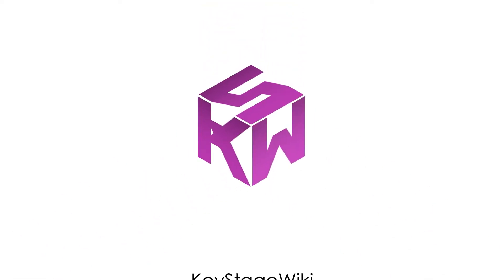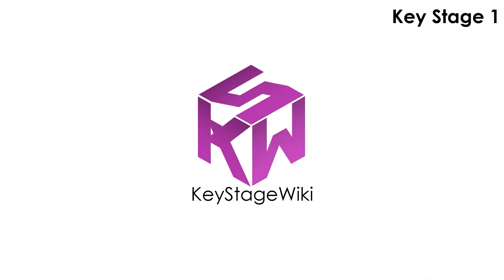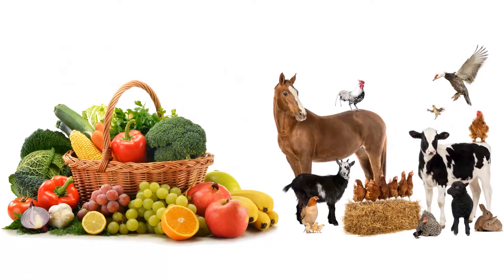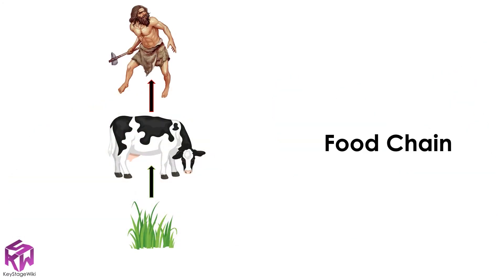Welcome to Key Stage Wiki. What things do you eat? Humans eat lots of different foods that can come from many different places around the world. But what is the food actually made from? Most of the food we eat is made of either plants or animals, and this makes us part of a food chain.